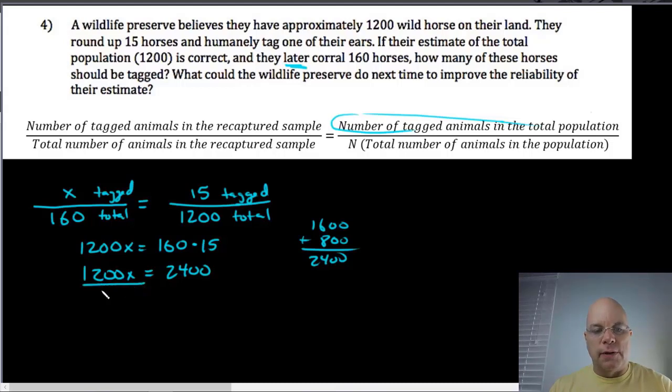If I want to know what x is, I don't want 1200 of them, I want one of them. So I undo this multiplying by 1200 by dividing by 1200, and then I need to do the same thing on the other side of my equation because of the property of equality. The 1200s cancel, I get 1x which is x, and then the quotient 2400 divided by 1200 is 2.